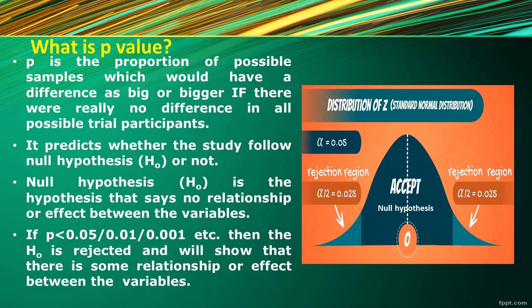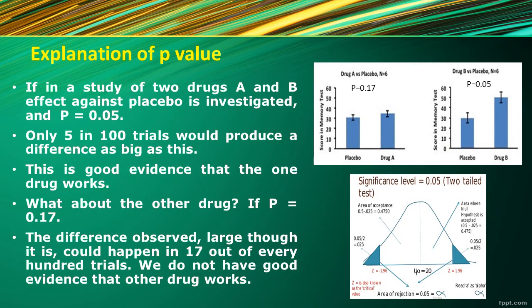Suppose we want to study the effect of two drugs A and B, and p was equal to 0.05 in the case of drug B. This means only five percent chance that the null hypothesis is correct, and 95 percent chance is evidence against the null hypothesis — meaning only five percent chance of no effect or relationship between variables. It means one drug works, which is drug B.